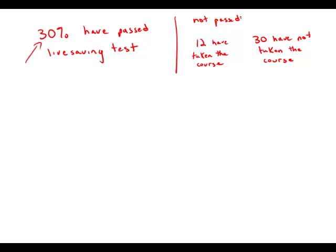Well, if 30 percent have passed the life-saving test, that means that 70 percent have not passed it. And of these, we have the group of 12 people who have taken the course, the 30 who have not taken the course. It sounds like those are the only two options. So it means that those 42 people together constitute 70 percent.